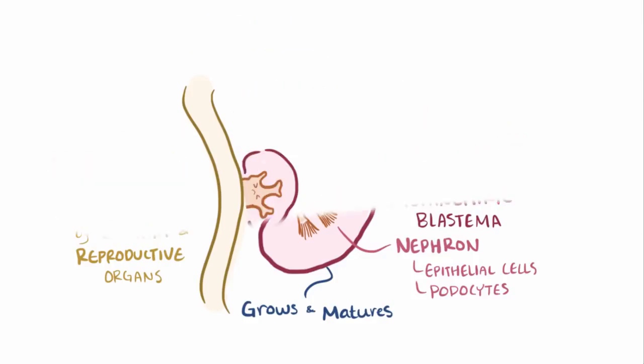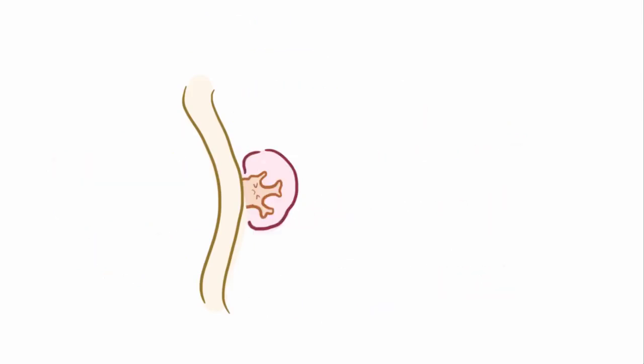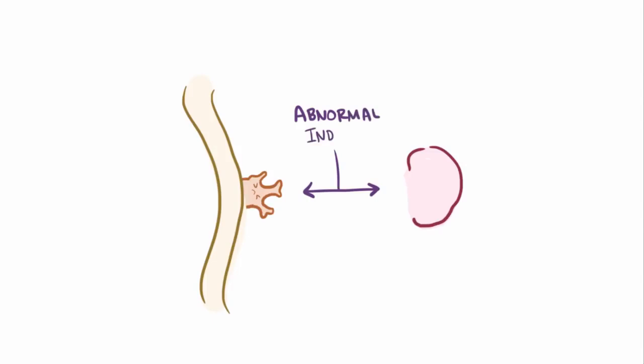In the third trimester and throughout infancy, the kidneys continue to grow and mature. Although not completely known, it's thought that MCDK is a result of some sort of abnormal induction of the metanephric blastema by the ureteric bud.